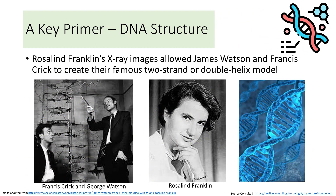In 1953, two researchers working at Oxford — Francis Crick and James Watson — finally uncovered the precise shape and function of the DNA molecule. This was the now famous double helix, roughly the shape of a spiral staircase. The arrangement of these nucleic acids in specific sequences carries all the detailed information necessary for the construction of a new organism: the genetic code.